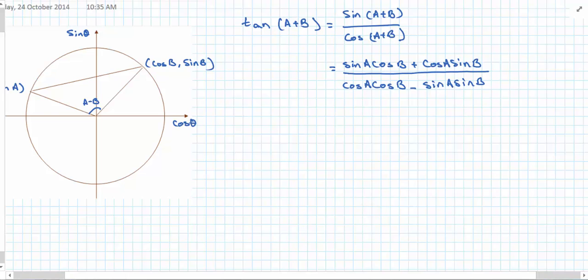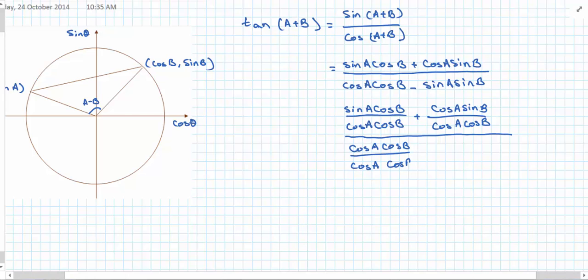So our numerator becomes sine A cos B over cos A cos B plus cos A sine B over cos A cos B. Our denominator becomes cos A cos B over cos A cos B minus sine A sine B all over cos A cos B.